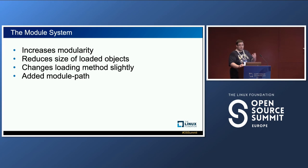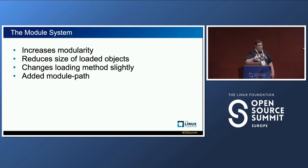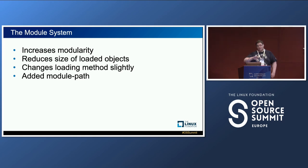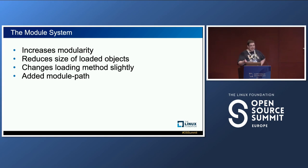In Java 9, what was added is called the module system. The module system was made to increase the modularity of Java programs and reduce the size of loaded projects — including Java itself. Whenever you run a program you'd load the entirety of the Java platform, which had become quite large. By providing modularity you reduce that size. It can also improve security — if you don't load something, any adversary that gets access to your system won't have access to functionality they would have had if Java core wasn't split into modules.